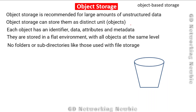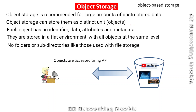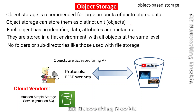All objects can be placed in a bucket, and a bucket is scalable — we can have millions of objects in a single bucket. A user can access those objects using an API (Application Programming Interface), and protocols like REST API over HTTP can be used to access objects in a bucket. Cloud vendors providing object storage services include Amazon Simple Storage Service (Amazon S3) and Microsoft Azure Blob Storage.